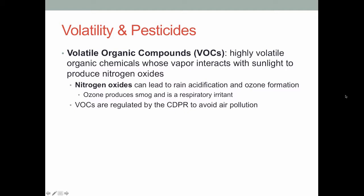Among volatile compounds, those of particular concern are volatile organic compounds (VOCs). These are organic compounds whose vapors interact with sunlight to produce nitrogen oxides. Nitrogen oxides can combine with various compounds in the atmosphere to produce rain acidification — more of a concern on the East Coast — but also can form ozone, creating smog, which is a respiratory irritant. As such, VOCs are widely regulated by the California Department of Pesticide Regulation to avoid air pollution.